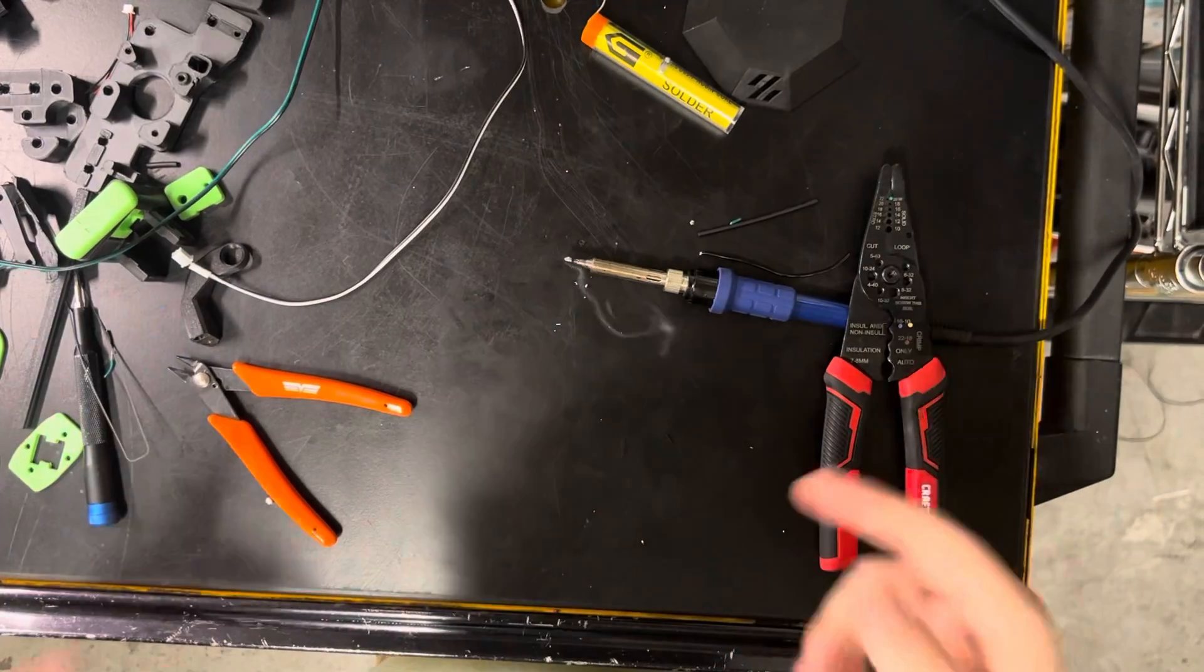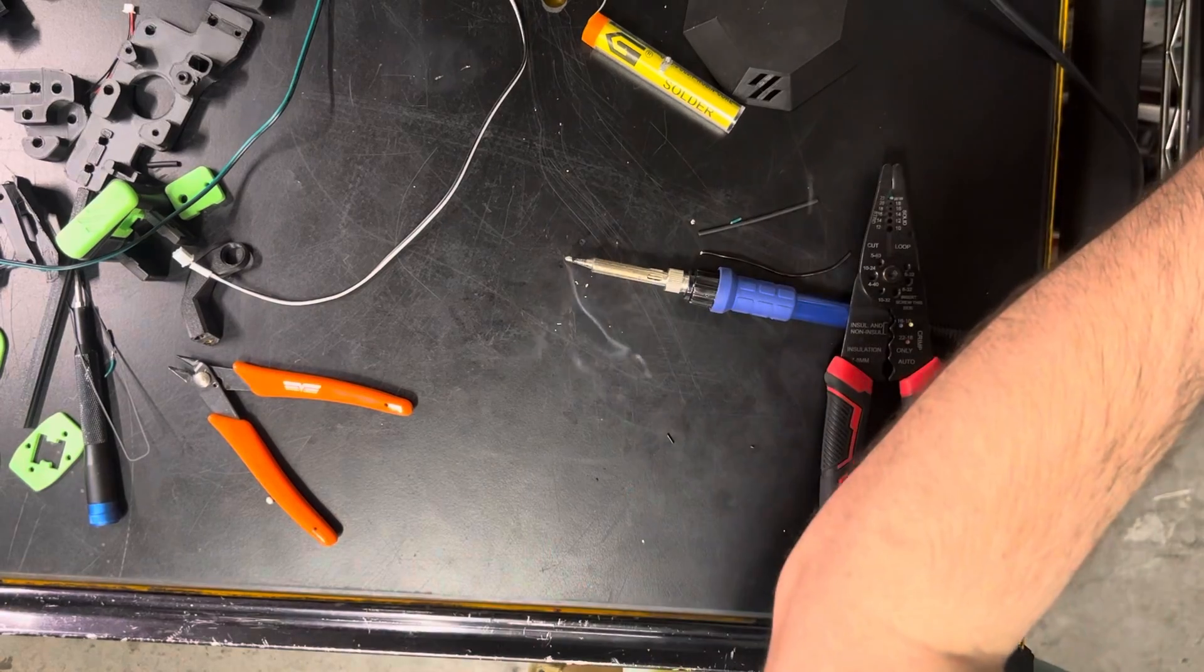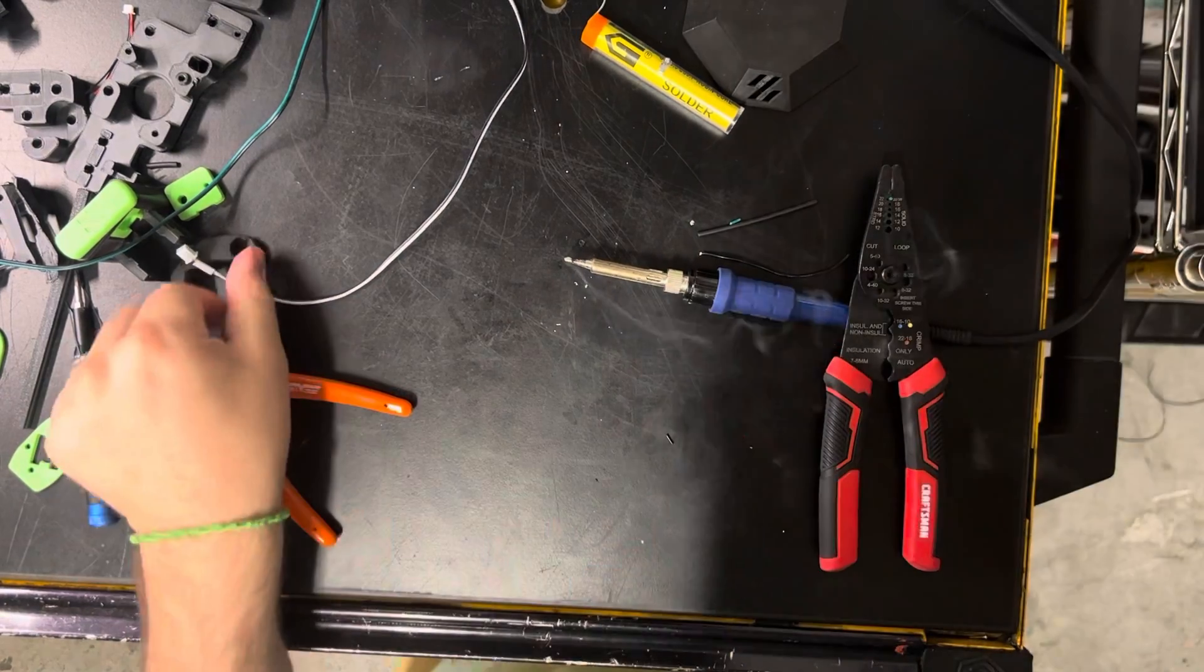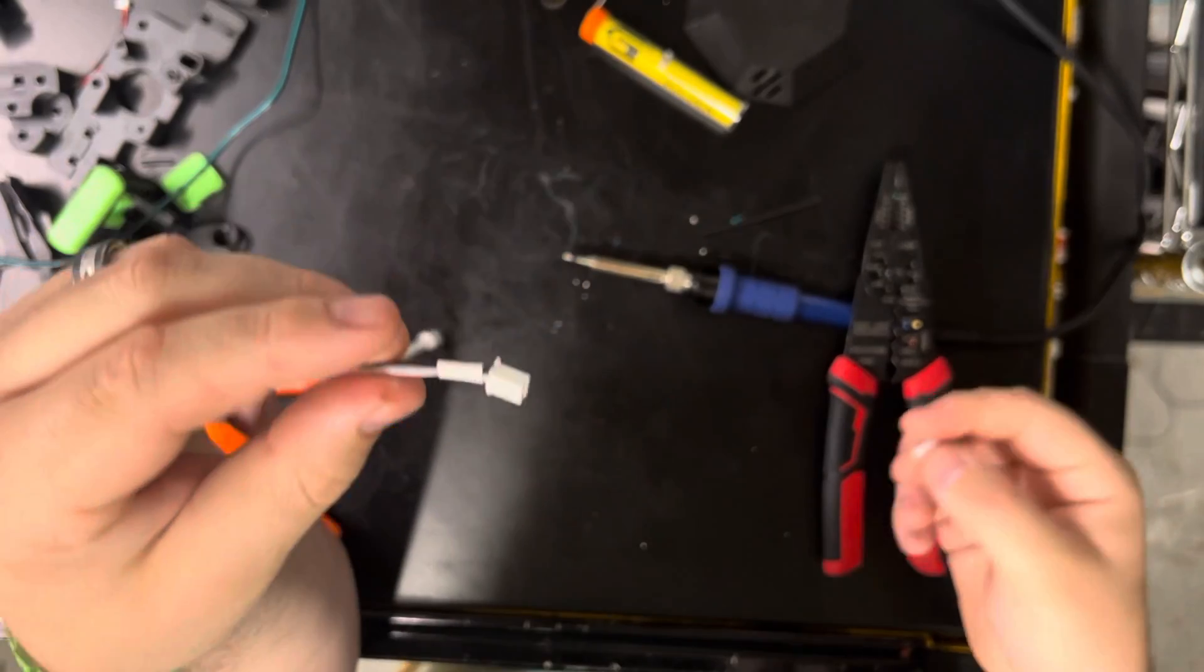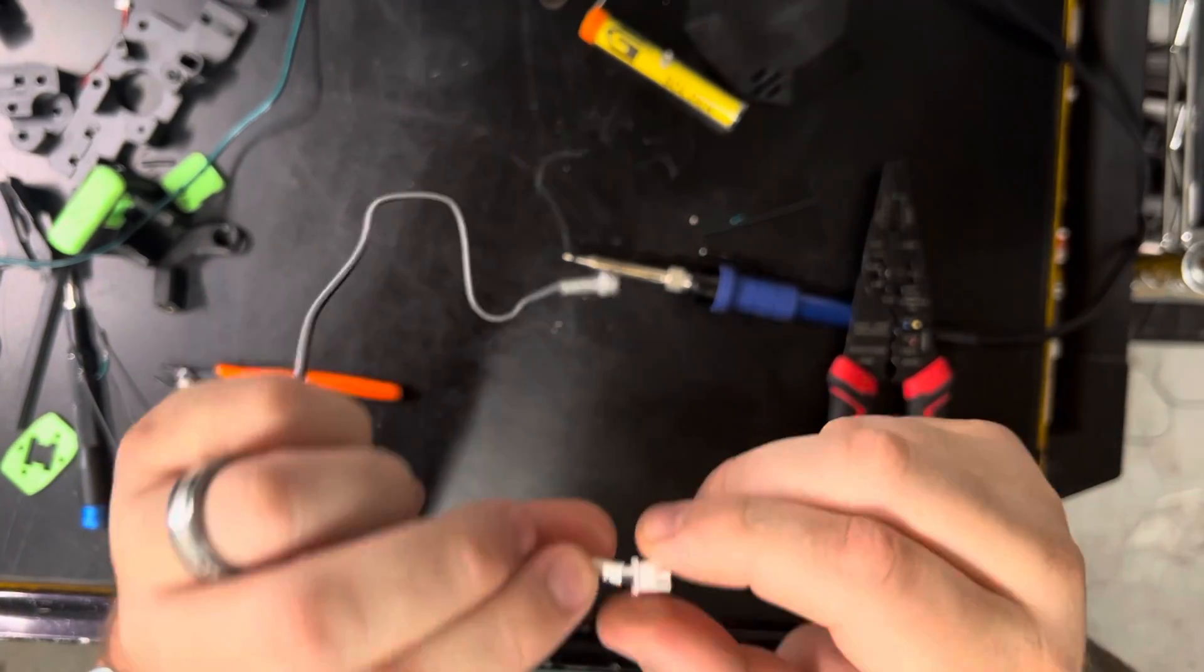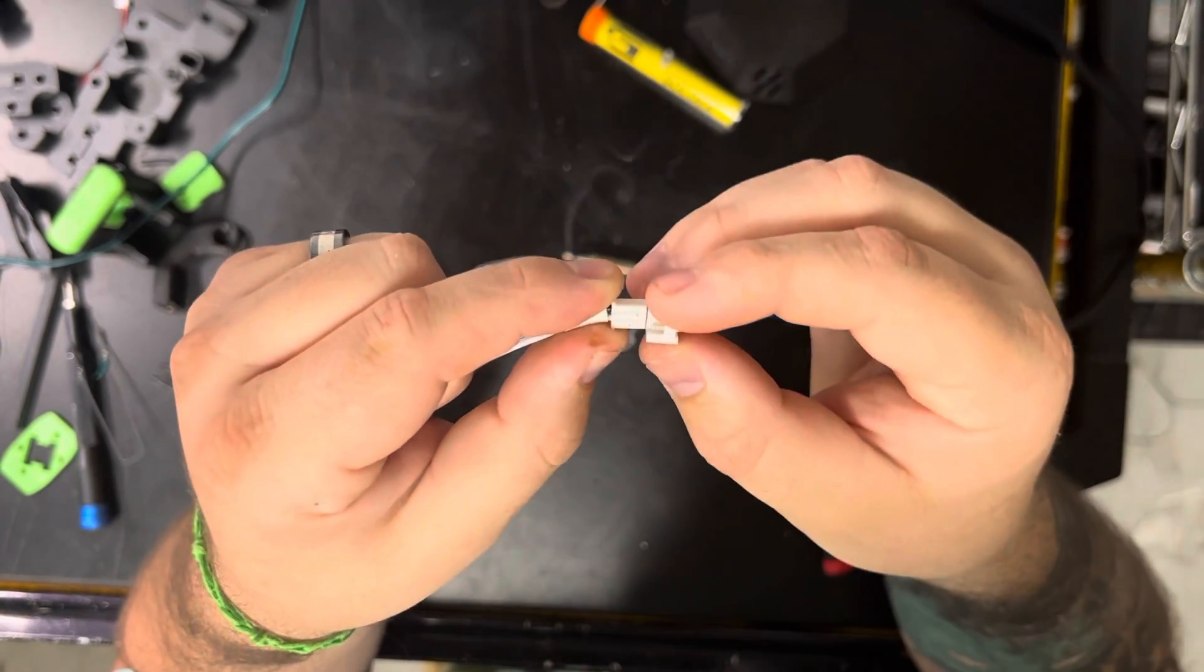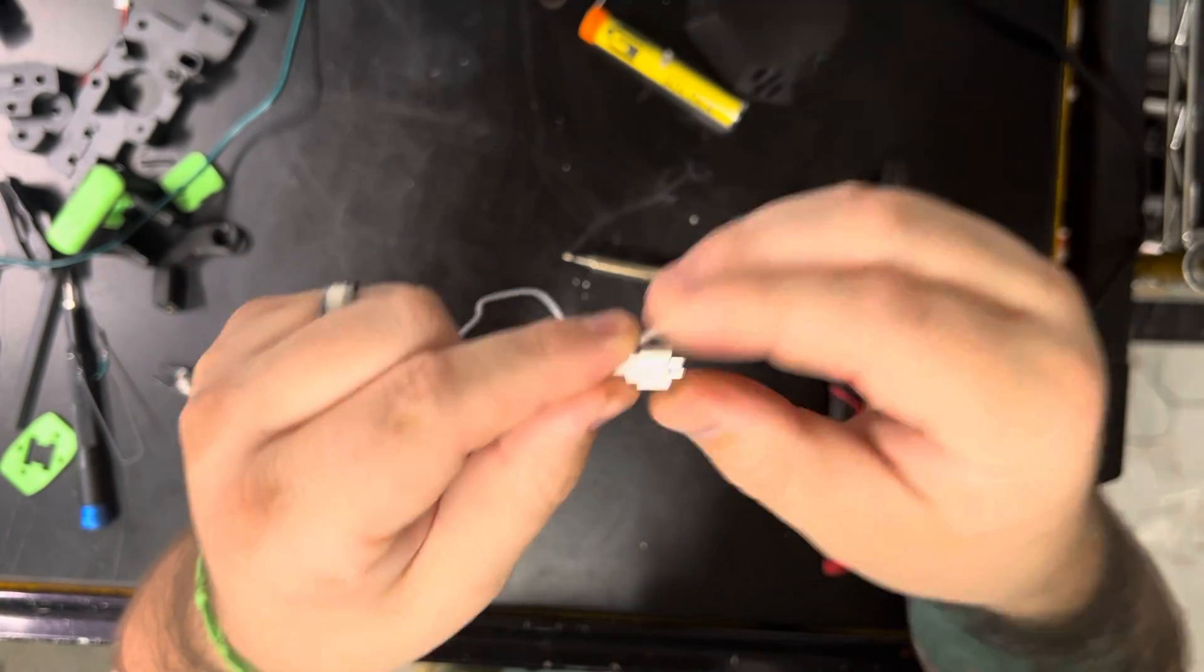So with your JST connectors, I highly suggest you build, if you don't have one, a cable. It doesn't have to have a little heat shrink on it, that doesn't really matter, but for all intents and purposes this is smart. So we're going to plug this guy in.